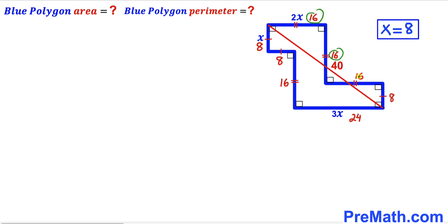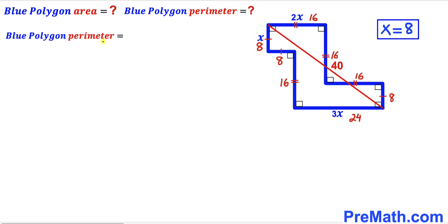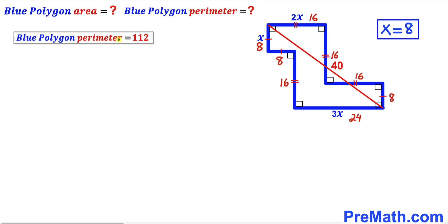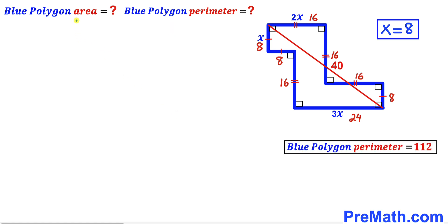Now our task is to calculate the perimeter of this blue polygon by adding all side lengths: 16 + 16 + 16 + 16 + 8 + 24 + 16 + 8 + 8. Adding all these numbers gives us 112 units. So the perimeter of the blue polygon is 112 units.